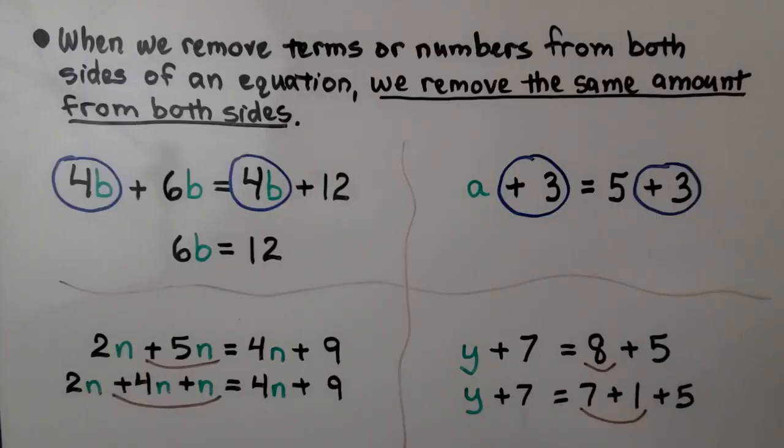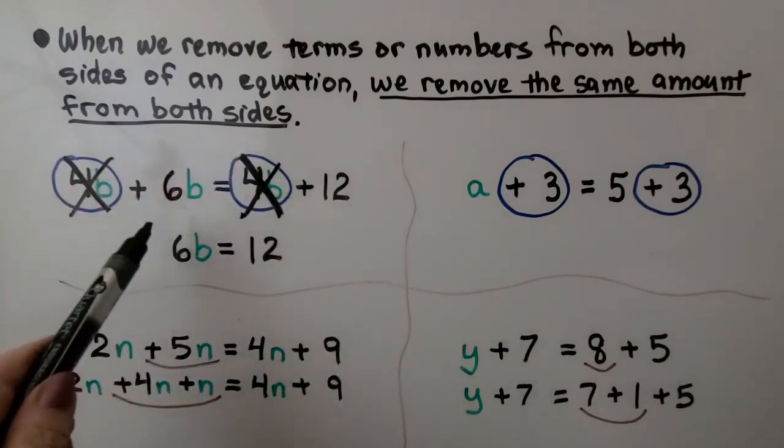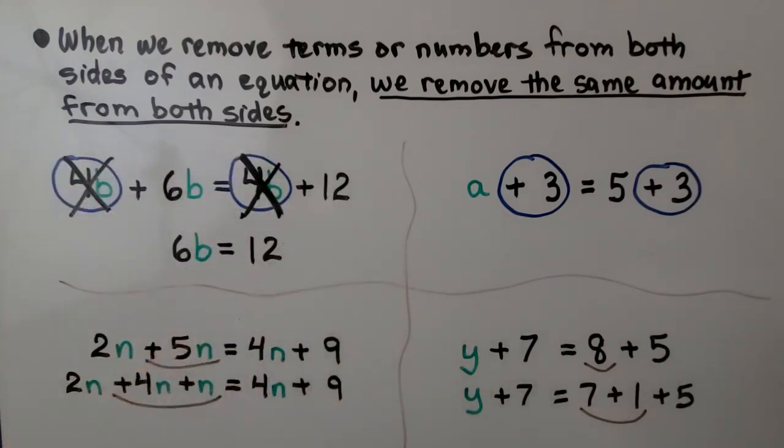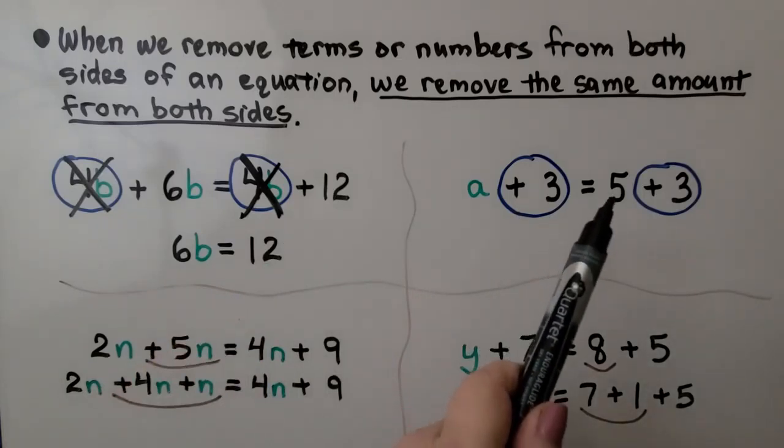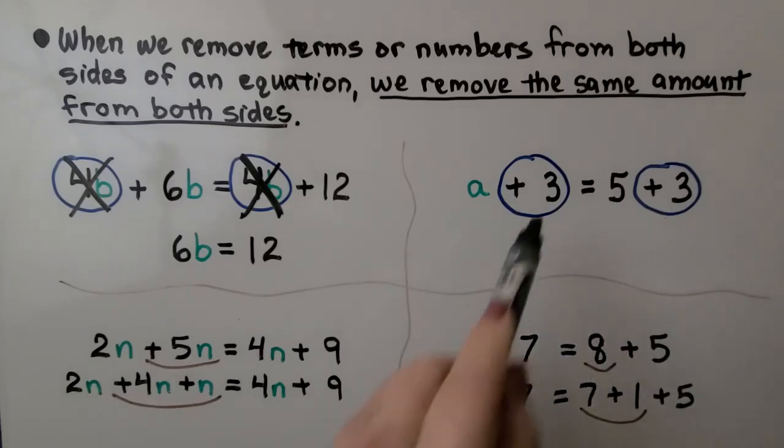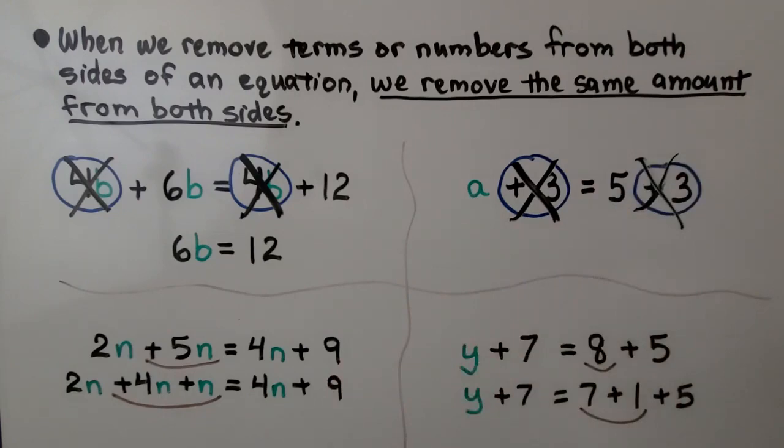When we remove terms or numbers from both sides of an equation, we remove the same amount from both sides. This one's easy because there's a 4b on the left and a 4b on the right. We can just remove these and we're left with 6b is equal to 12. And this one is easy. We have a plus 3 is equal to 5 plus 3. We can take away the plus 3s and see that a is equal to 5.